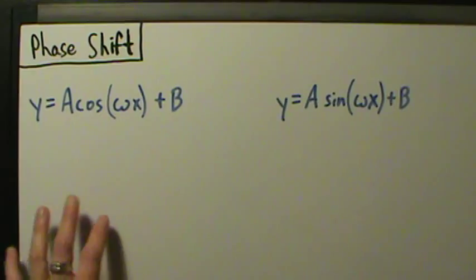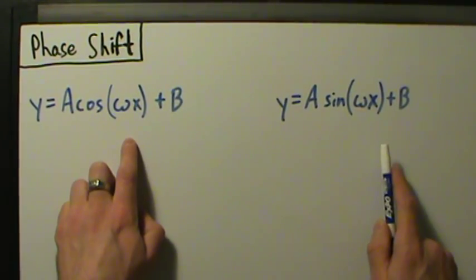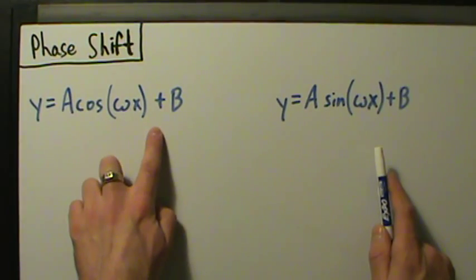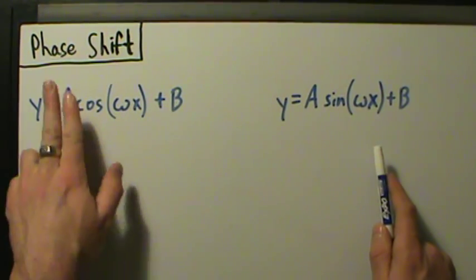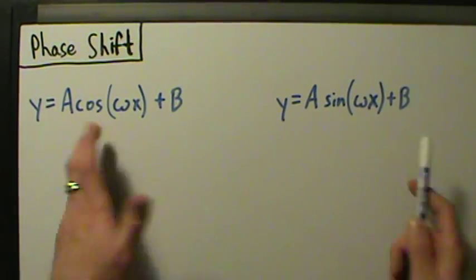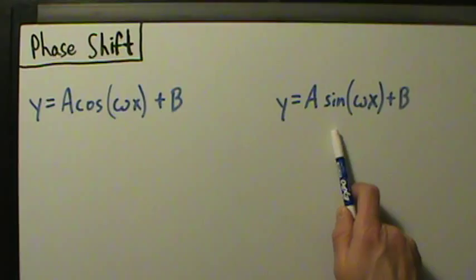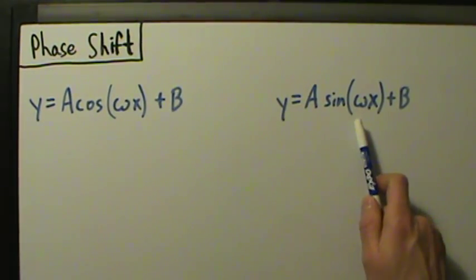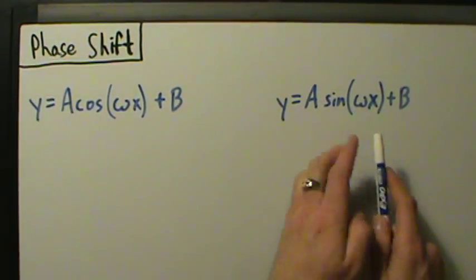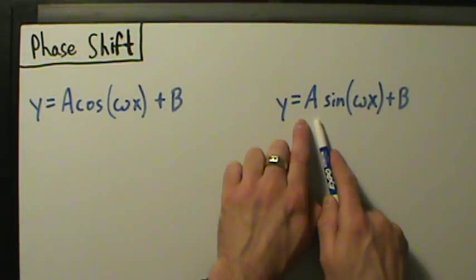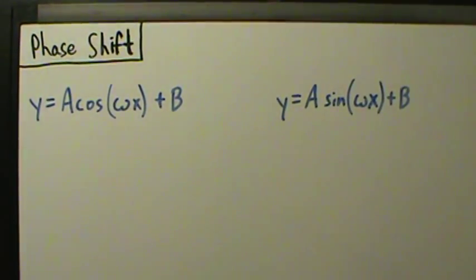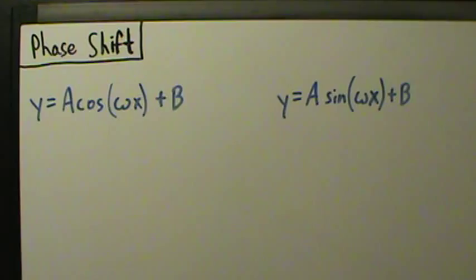These are the types of functions we've been dealing with so far. For cosine: y equals a cosine of omega x plus b, where b is the vertical shift, the absolute value of a is the amplitude, and 2 pi over the absolute value of omega is the period. The same applies to sine: y equals a sine of omega x plus b, where absolute value of a is the amplitude and 2 pi over the absolute value of omega is the period.